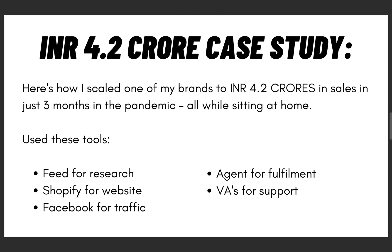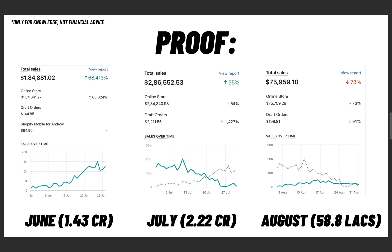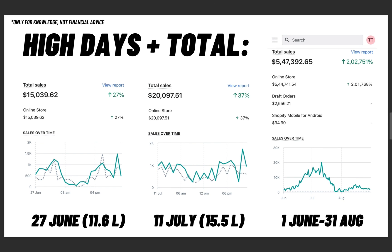Now I want to go into a case study — the ₹4.2 crore case study. This is how I scaled one of my brands to ₹4.2 CR in sales in just three months during the pandemic, all while sitting at home. The tools I used are literally what I just explained: I used my social media feed to find the product — I found it on my Facebook feed — built my website on Shopify, used Facebook ads to drive traffic, used a private shipping agent to fulfill orders, and hired VAs for support. In June we did ₹1.43 CR; in July we scaled to ₹2.22 CR; August was a slower month at ₹58.8 lakhs. The highest day of June was June 27th at ₹11.6 lakhs, and July 11th was my highest day ever at ₹15.5 lakhs. From June 1st to August 31st, we did $547,392 — which comes out to ₹4.2 CR.